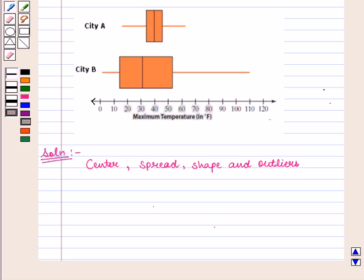And here we are given the maximum temperatures of two cities in degrees Fahrenheit. In order to compare the two data sets of cities,